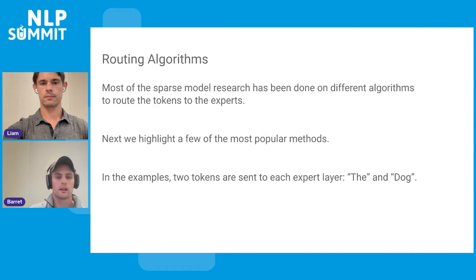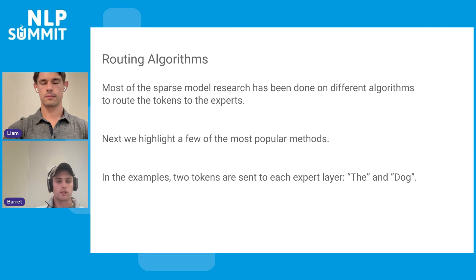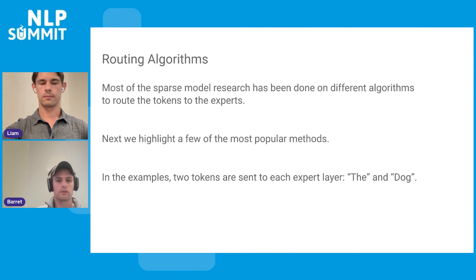A big area of research with sparse models is actually the routing algorithms, which determine the process of: given a token, where does it actually go? We're going to talk about a few of the most popular routing algorithms. For each diagram, there will be two tokens going into the expert layer, and you can see some visualization for how these two tokens are routed.